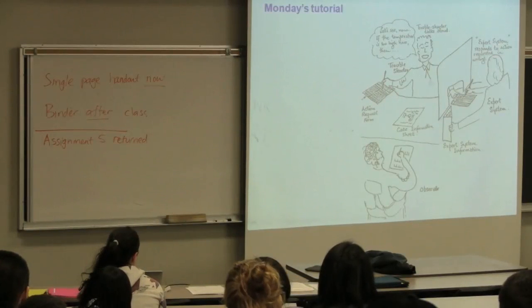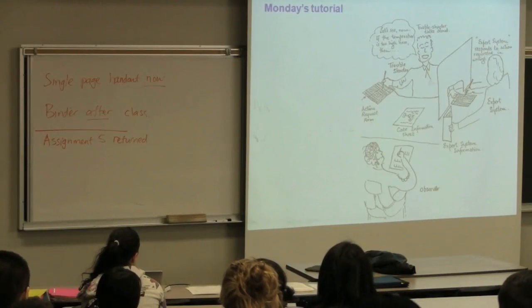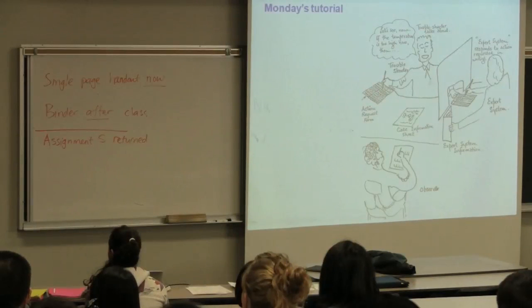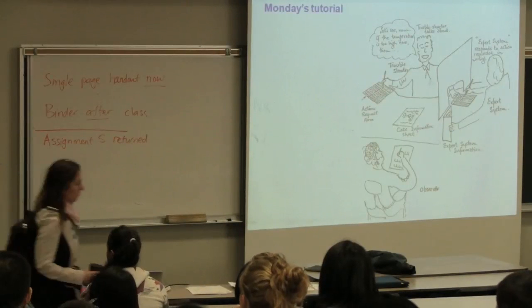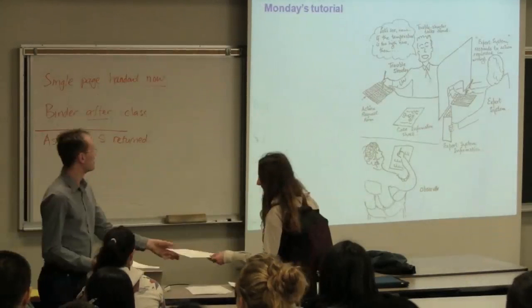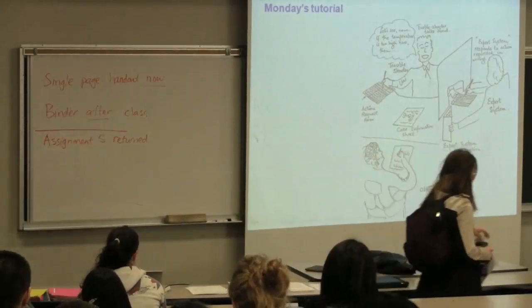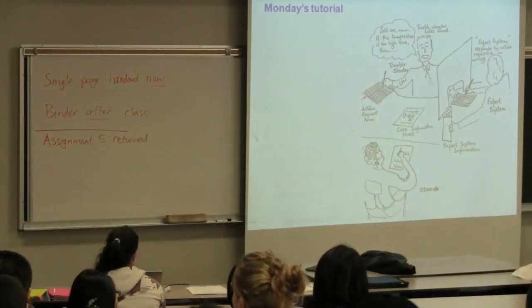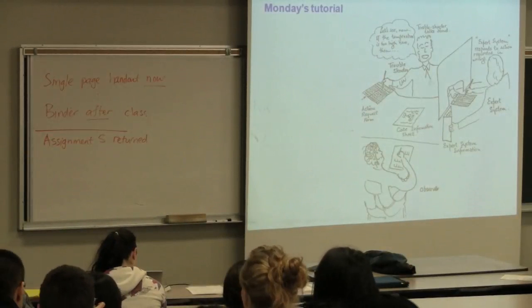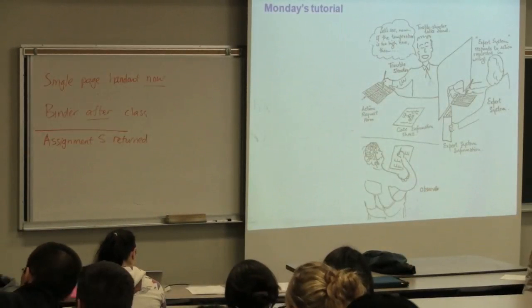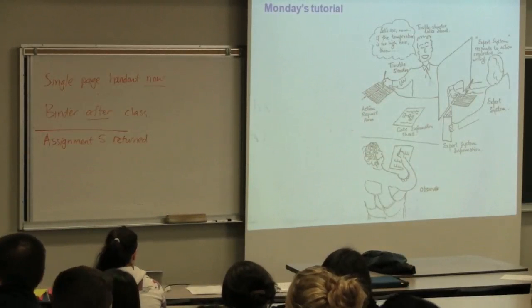Every one of you will play the three roles here on Monday. You'll interchange roles. You'll have a chance to be the troubleshooter, the expert system, or the observer. This is why it's absolutely critical that you show up on Monday. Because without any one of these, the triad doesn't work out. Please ensure that you are there or let me know by tomorrow if you cannot make it so I can reassign the triad groups.